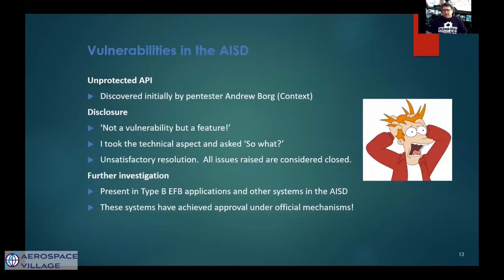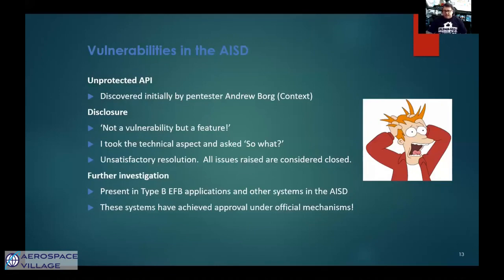Further investigations on other aircraft uncovered examples of the same type of unprotected API — different API, but unprotected all the same — inside the AISD. They are accessible from the EFB and from other systems onboard. Despite going through responsible disclosure routes as an independent researcher, I was not only dismissed for making unrealistic assumptions but had to fight for updates. The assumption I made was based on a proposed commercial offering from the manufacturer, coupled with their own API documentation detailing how it would work — yet it was still considered unrealistic. They may have made a separate assessment themselves and started on a more secure pathway for the release of this new functionality, which would be great, but I was not made privy to the details, so for now I don't know.